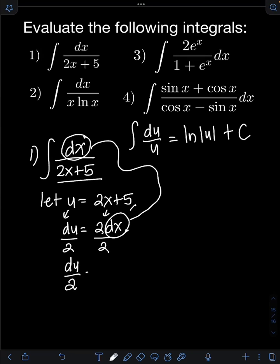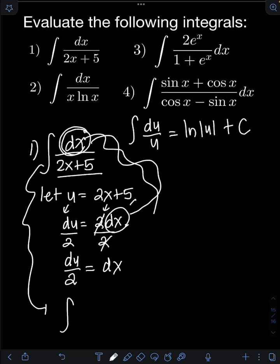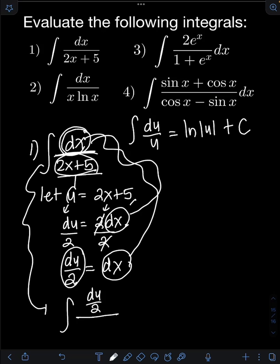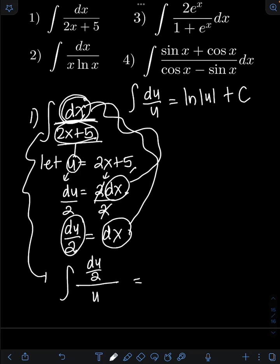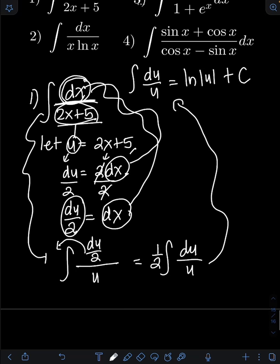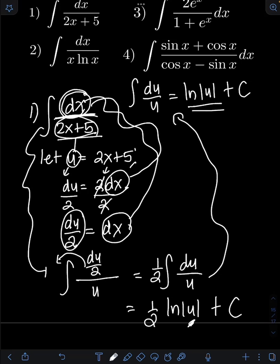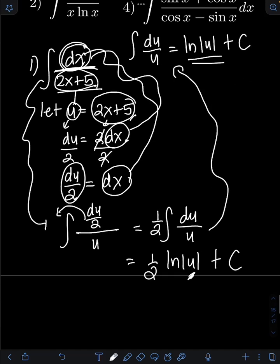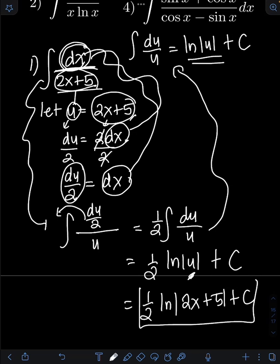So we have du over 2 equal to dx. If we substitute, we start with dx — that's equal to du over 2 — all over 2x plus 5, which equals u. This one-half is just a constant, so I can put it in front of the integral. We have one-half times the integral of du over u, which equals ln of the absolute value of u plus C. Transforming back: u equals 2x plus 5, so the final answer is one-half ln of the absolute value of 2x plus 5, plus C.